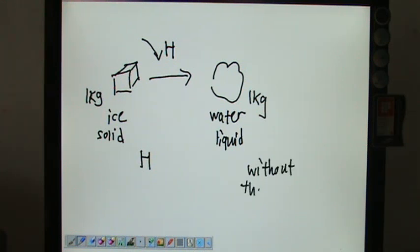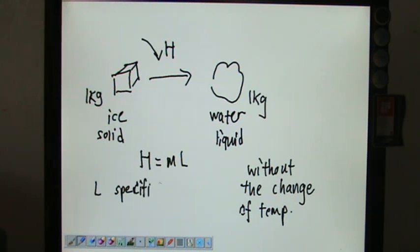Without the change of temperature—later we'll do one experiment to find out why we don't need the change of temperature. So this heat is mL, and this L is defined as specific latent heat. Not vaporization, of course—this is called fusion.